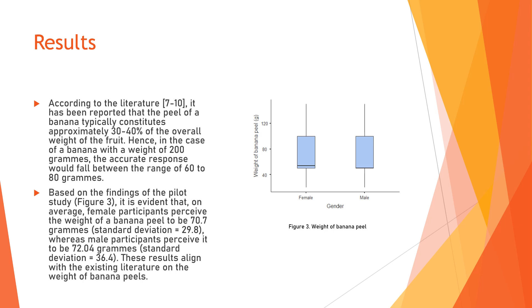According to the literature, the peel of the banana typically constitutes approximately 30 to 40% of the overall weight of the fruit. Hence, in the case of a banana with a weight of 200g, the accurate response would fall within the range of 60 to 80g. Based on the findings of the pilot study, it is evident that on average, female participants perceived the weight of the banana peels to be 70.7g, whereas male participants perceived it to be 72.04g. The results align with the existing literature on the weight of banana peels.